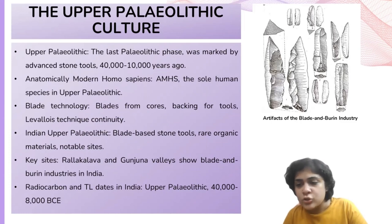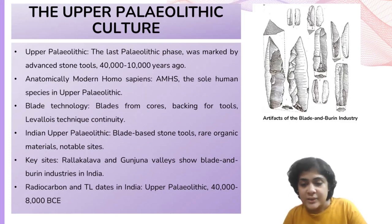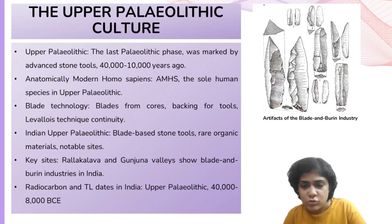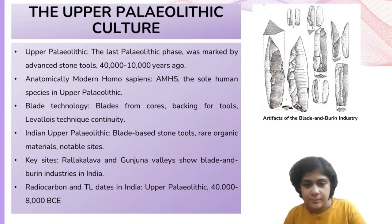The Gunjana valleys in the southeastern Ghats have provided valuable evidence of blade and burin industries during the Upper Paleolithic period. Radiocarbon dates obtained from different parts of India and thermoluminescence dates from the Kurnool caves indicate a time period ranging from 40,000 BCE to 8,000 BCE.